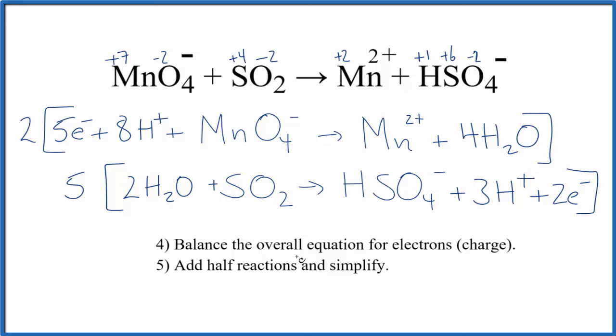Then we could simplify the half reactions. So I'm going to multiply two times everything here, five times everything here. Then I'm going to write my reactants and my products, and we can simplify. That'll look like this.